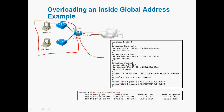Next, we use 'ip nat inside source list 1 interface serial 0 overload'. The access list number 1 is referenced here as well. The serial 0 interface has the IP address 172.17.38.1 assigned to it. After creating this configuration, we can verify it in privileged mode.